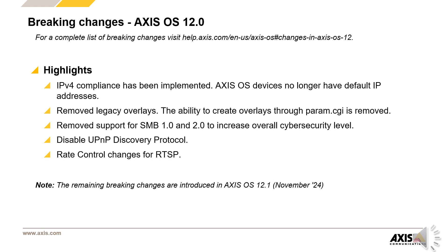We have removed support for SMB versions 1 and 2 to increase overall cybersecurity. The latest version, SMB 3, will be in use. We have also disabled the UPnP discovery protocol. Axis devices currently have UPnP and Bonjour enabled in factory-defaulted state for general device discovery. Bonjour allows device detection within the local subnet, while UPnP allows discovery across networks. Axis believes that local subnet detection is the main use case, so UPnP is disabled on factory-defaulted devices going forward. This lowers the attack surface and increases overall network security. UPnP remains available with the option for users to enable it if needed.